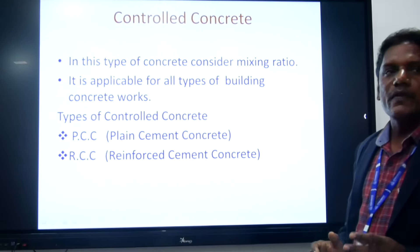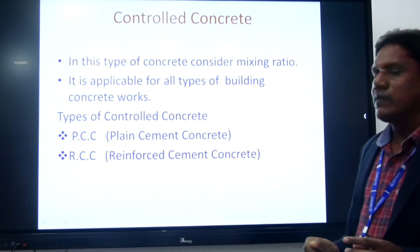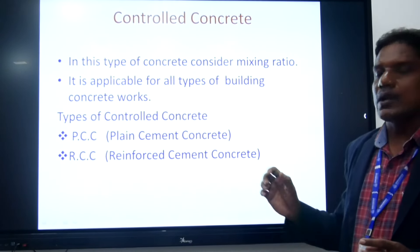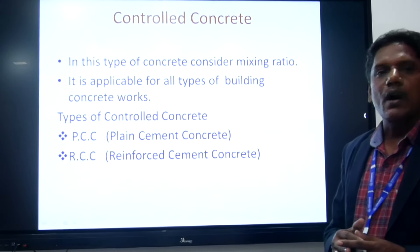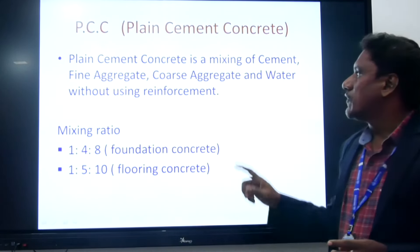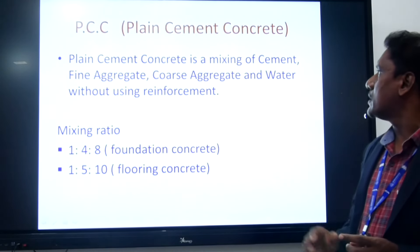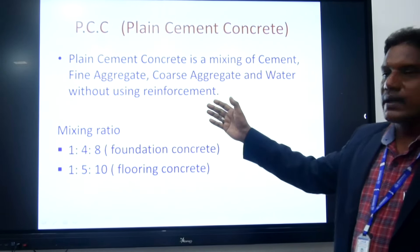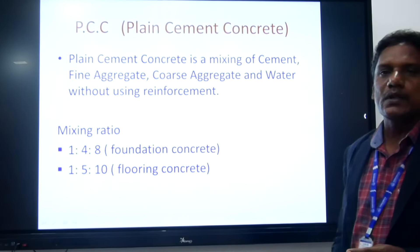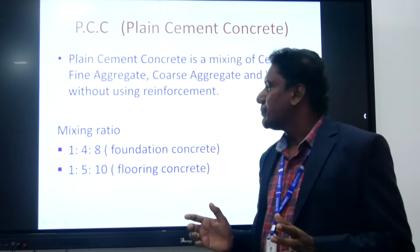So what are the types of controlled concrete? There are two main types: the first one is PCC and the other one is RCC. PCC stands for Plain Cement Concrete and RCC stands for Reinforced Cement Concrete. Plain cement concrete is the mixing of cement, fine aggregate, and coarse aggregate with the addition of water, without using reinforcement. Reinforcement is nothing but steel.